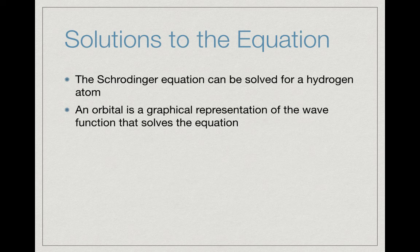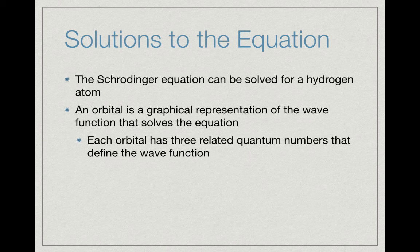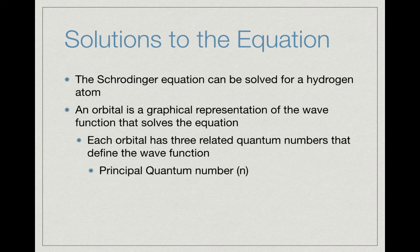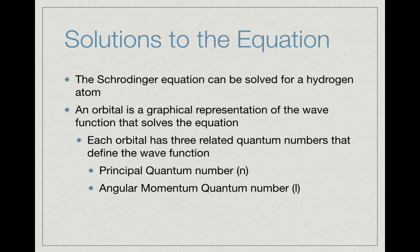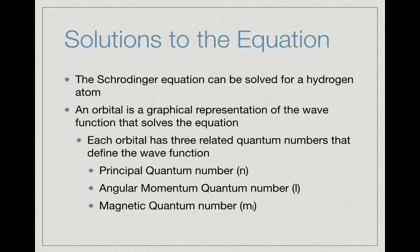Now each orbital has some different variables, and we call those quantum numbers. These quantum numbers are related to each other—they're interrelated within the model and within the equation. Three quantum numbers actually define the wave function: n, the principal quantum number; l, the angular momentum quantum number; and the magnetic quantum number m sub l. These really define the wave function itself.